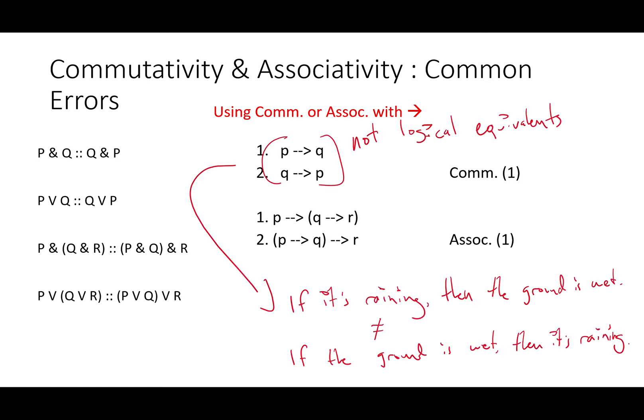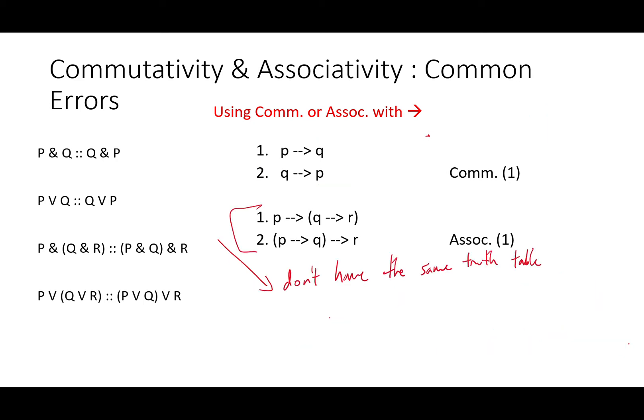Let's take a look at trying to use commutativity or associativity with an arrow and see why it doesn't work. If P then Q and if Q then P are simply not logical equivalents. If it's raining, then the ground is wet does not mean the same thing as saying if the ground is wet, then it's raining. As we saw with modus ponens and modus tollens, there's a lot of ways for the rain to be going, or for rain and wet ground to not track perfectly.